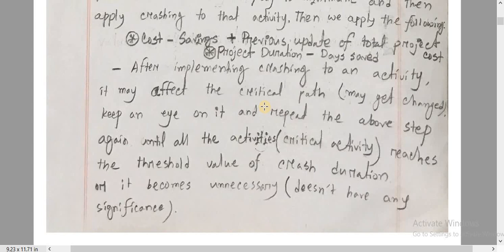We repeat until all the activities on the critical path reach the threshold value of crash duration, or the total crashing process becomes unnecessary. So we need to change the iteration accordingly.